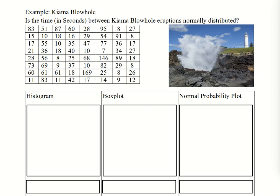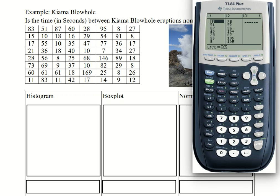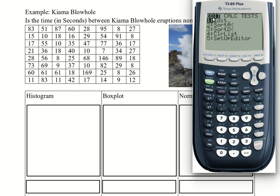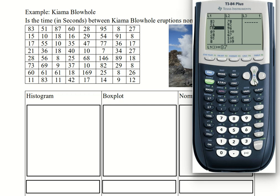Our first example comes from a blowhole. It asks: is the time in seconds between eruptions normally distributed? Here is a table of all of that data. We have to load that data into our calculator — go into the stat menu, leave it on edit, and press enter. Starting with 83, 51, 87, 60, 28, 95, 8, 27, then 15, 10, 18, 16, 29, and so on. This is that data entered into L1, ending with 14, 9, 12. Data in L2 is for the next example.